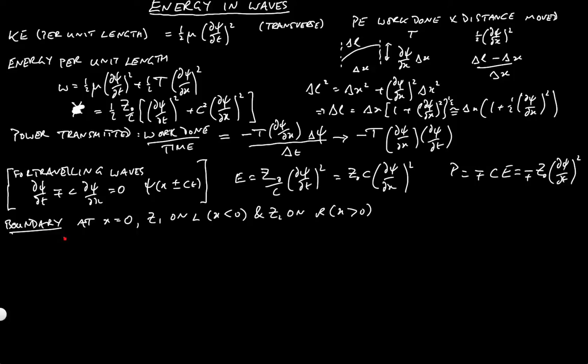And then we can write the solution. We write that psi l, psi on the left, i.e. for x less than 0, is a cos of omega t minus k1 x plus r a cos of omega t plus k1 x. And psi on the right is a t cos of omega t minus k2 x.